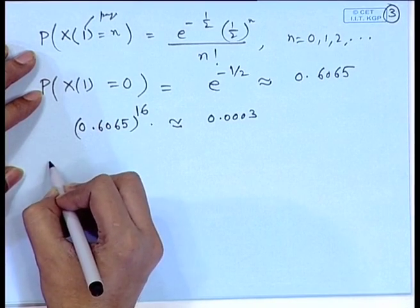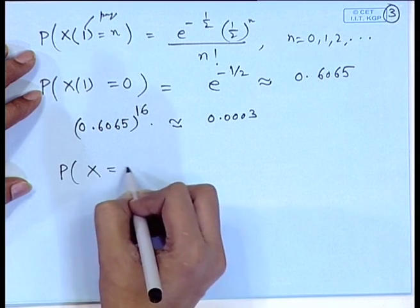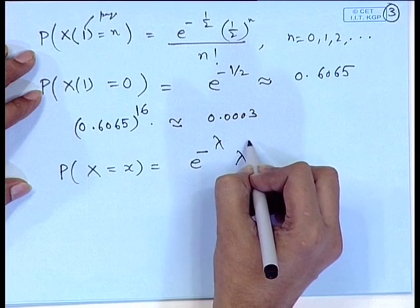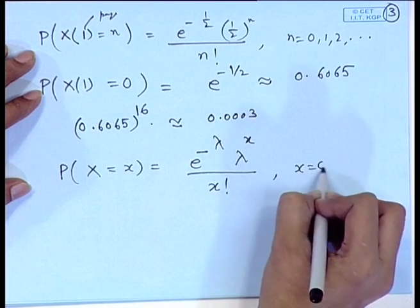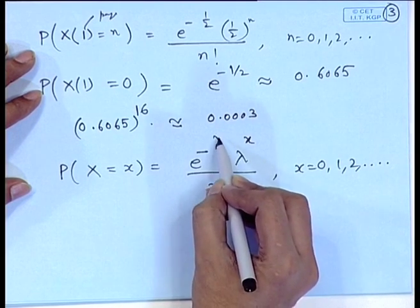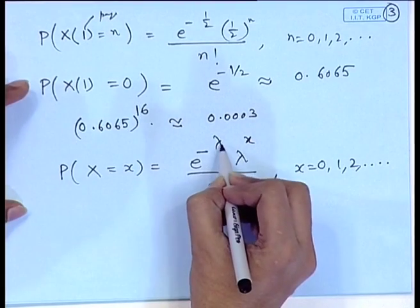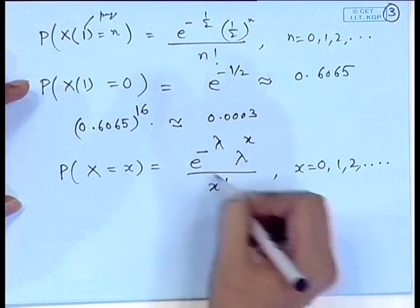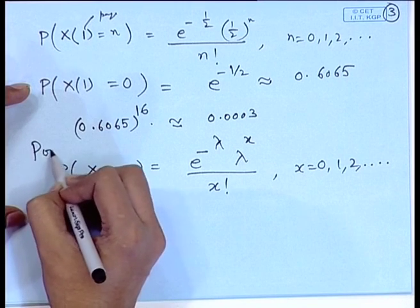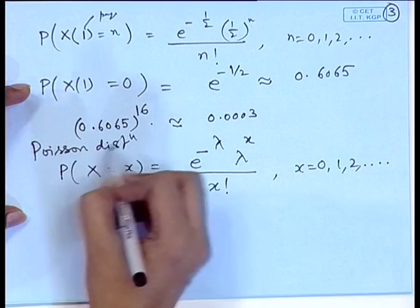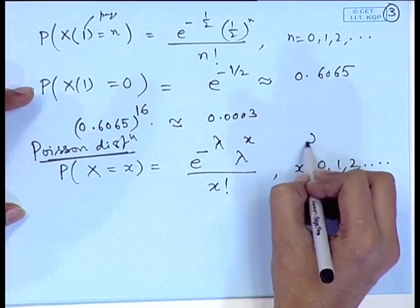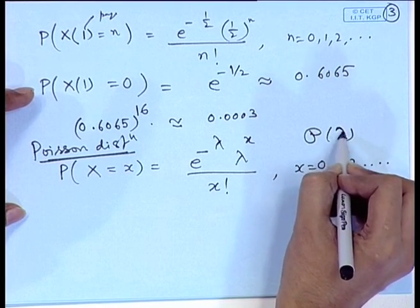Now let us look at the characteristics of the Poisson distribution. For convenience, we denote P(X=x) = e^(-λ) × λ^x / x!, for x=0,1,2,... Here λT has been replaced by λ, because λ is the rate of occurrence when the unit of time, area, or space is taken as T. This is a convenient way of expressing the Poisson distribution, denoted Poisson(λ).